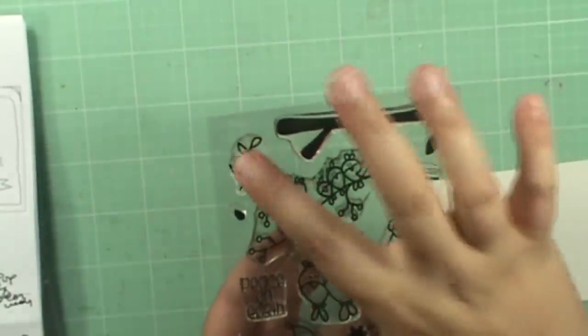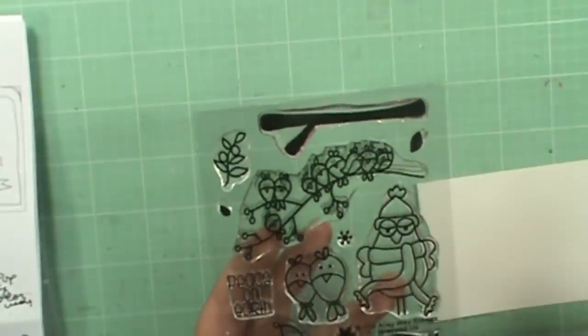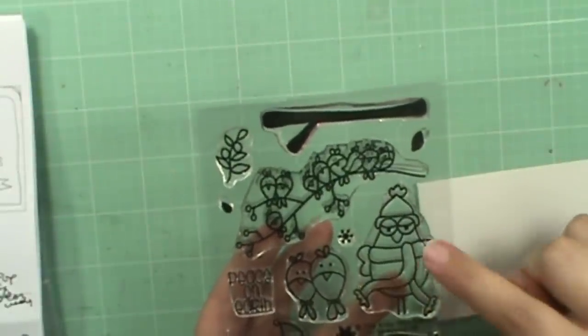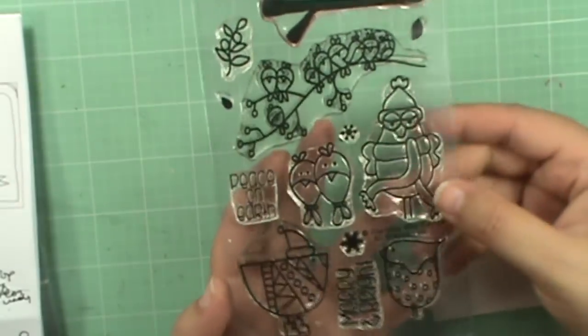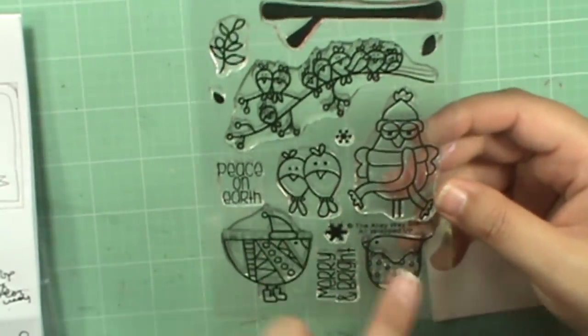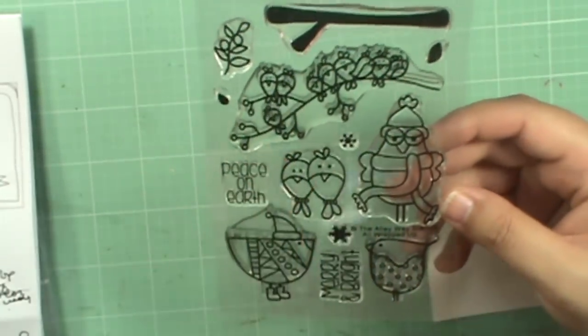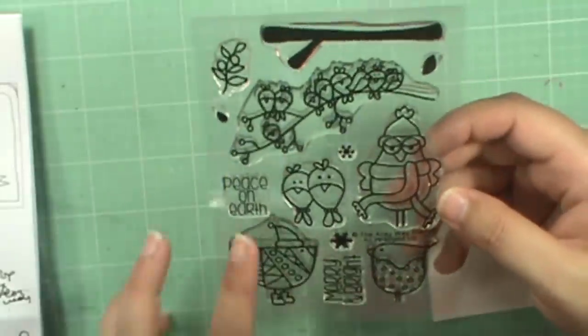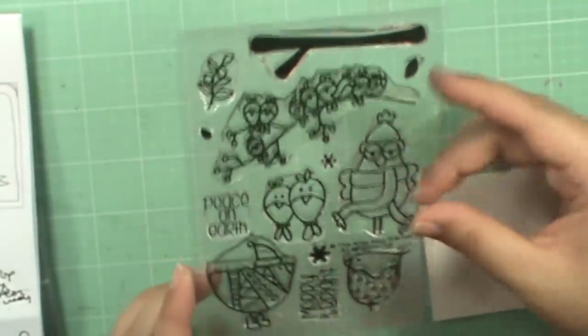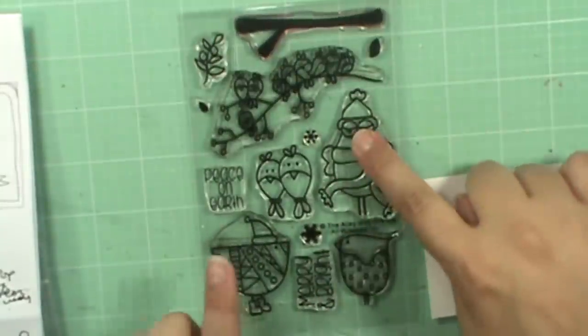There are leaves with berries, a couple snowflakes, and of course there's a bird with a scarf, a bird with a sweater and boots, and just some birds and a bunch of birds on a branch. The sentiments you get are merry and bright and peace on earth. Today I'm going to be using these three birds right here.